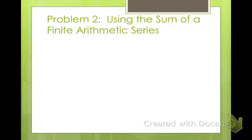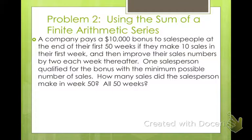Using the sum of a finite arithmetic series. A company pays a $10,000 bonus to salespeople at the end of their first 50 weeks if they make 10 sales in their first week and then improve their sales by 2 each week thereafter. First of all, who would like a $10,000 bonus? I'd be willing to work pretty hard for 50 weeks. What they do is if you make 10 sales, and then you increase by 2 more each week. After the first week, on the second week you'll have to have made 12 sales. On the third week, 14 sales. It increases by 2 each time.